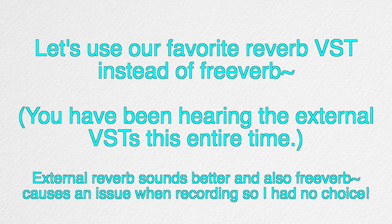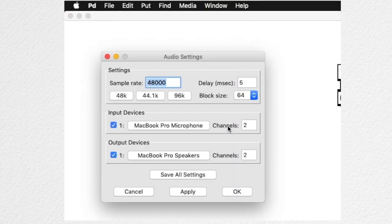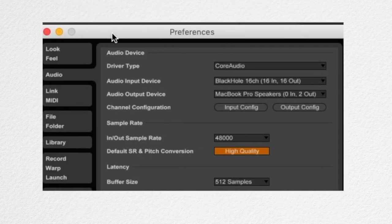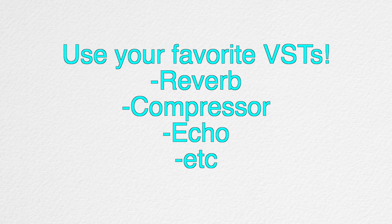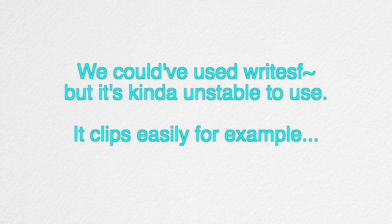Because Freeverb doesn't sound too good, what we can do is download an audio rerouter application called Black Hole. After installing it, we can change the output to Black Hole, then open our DAW of choice and change the input to Black Hole. Now we can use our favorite VSTs and make things sound much better. We can also record our Pure Data audio as well. We could have used the WriteSF~ object, but I'm not a big fan of it.